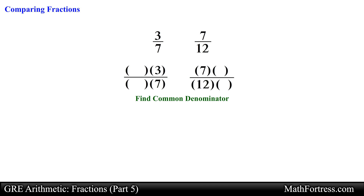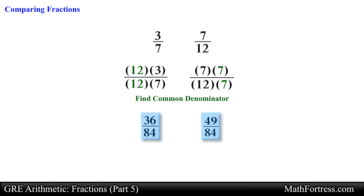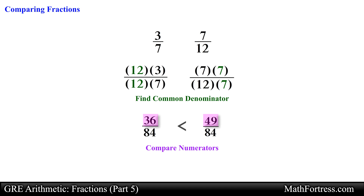So we multiply the numerator and denominator of the first fraction by 12, and multiply the numerator and denominator of the second fraction by 7. Doing that gives us the following equivalent fractions: 36 over 84 and 49 over 84. Now that both fractions have the same denominator we can compare the numerators to determine which fraction is bigger or smaller. In this case the second fraction is larger than the first.